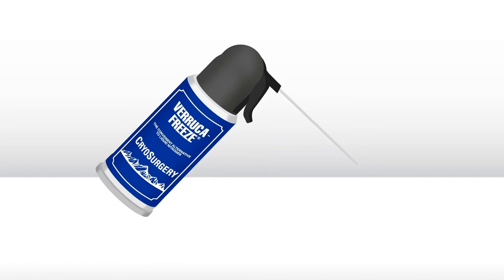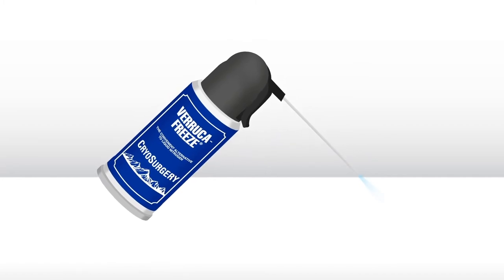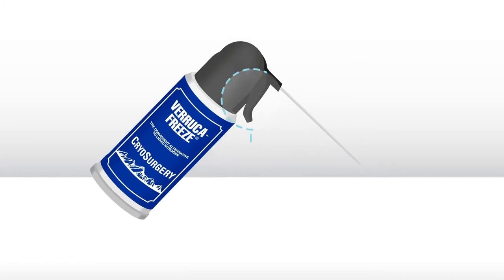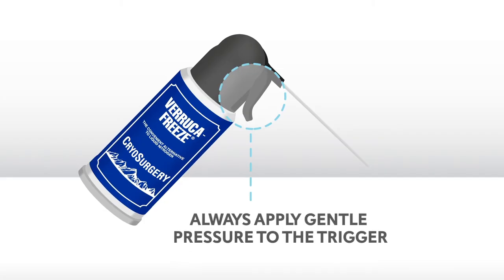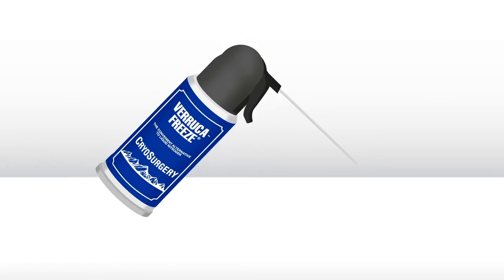Test the canister by pointing the extender tube towards the ground and gently pulling the trigger. It is important to always apply gentle pressure to the trigger. This will conserve your cryogen and reduce splatter during treatment.